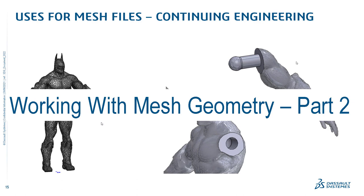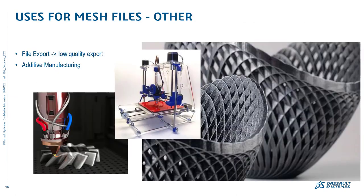This continuing engineering workflow is the bulk of the content in part two of the Working with Mesh Geometry series. Other uses include neutral file export — though exporting to mesh is much lower quality than STEP, IGES, or Parasolid. And as we all know, mesh files are what is used in additive manufacturing: we start with a mesh file, slice the model, and get a series of lines used to write G-code to drive the 3D printer.